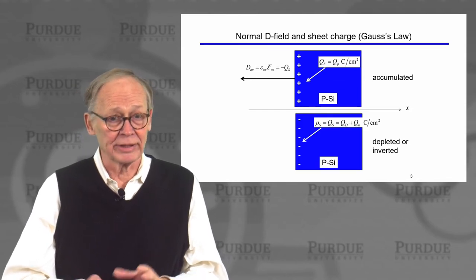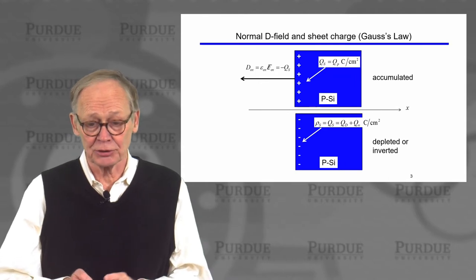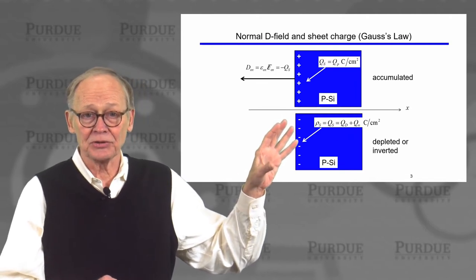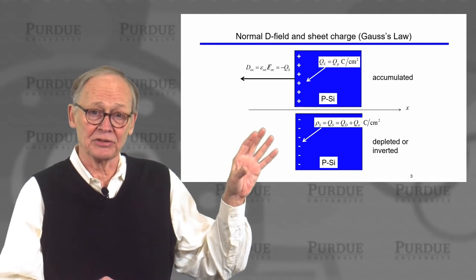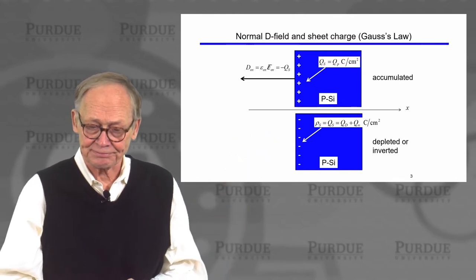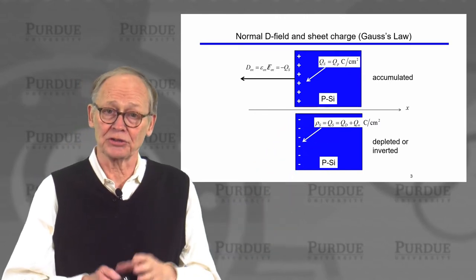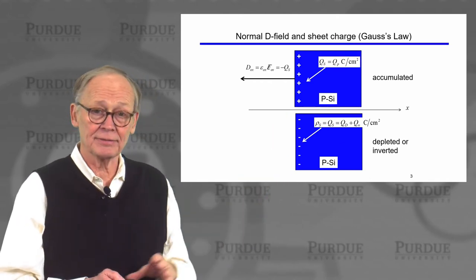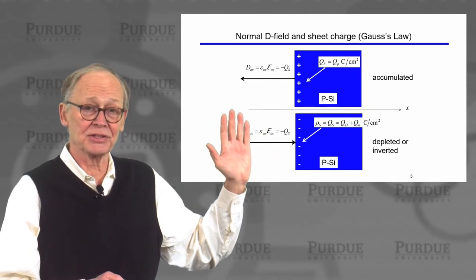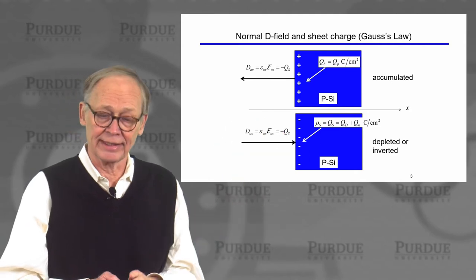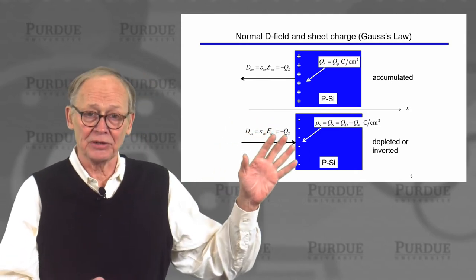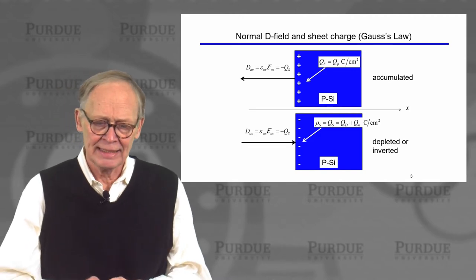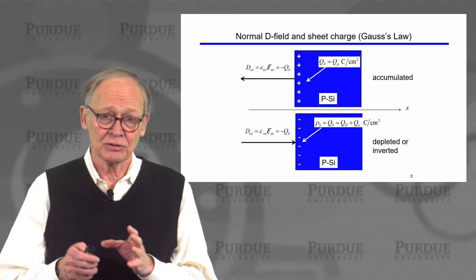When we deplete or invert the semiconductor, we have a positive surface potential. We have negative charges in the semiconductor due to the ionized acceptors in the depletion layer and also the mobile electrons — the inversion layer, if we're above threshold. So the charge in the semiconductor is the sum of Qd, the depletion charge, and Qn, the mobile electron charge. The displacement field points from the positive charges on the gate towards the negative charge, and it equals minus Qs. Since Qs is negative, the displacement field points in the positive x direction. That's Gauss's law, relating the electric field in the oxide to the charge in the semiconductor.